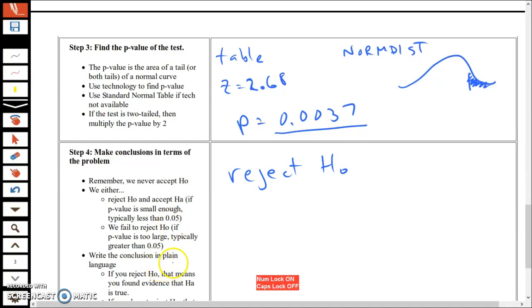In conclusion, write in plain English. I can say there is evidence based on this sample that the majority supports raising the minimum wage to $15 an hour. That's it.